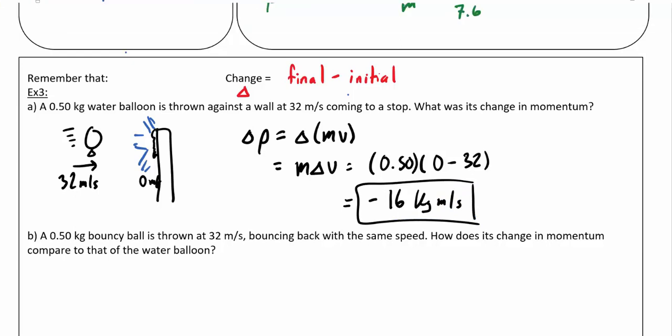So something to think about: why is it negative? Well, if the balloon was traveling to the right and then it stopped, the wall must have pushed back on it to the left. It had a bunch of momentum, and in a way it lost that, so we could think of that as being negative.